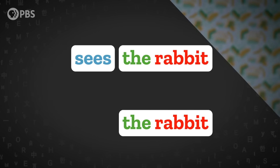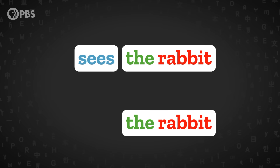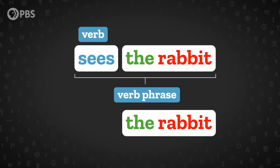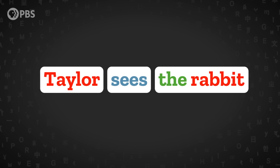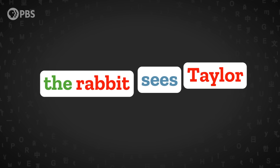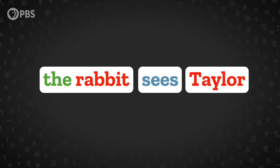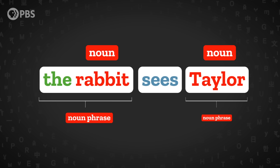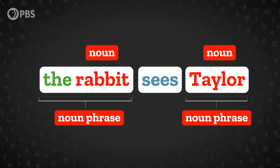In this video, we're going to meet some of the common phrases that are the basis of English grammar. For example, the difference between the phrases 'seize the rabbit' and just 'the rabbit' is that 'seize the rabbit' has a verb in it, so we can call it a verb phrase. Using the substitution test we talked about in the previous video, we can swap the positions of 'Taylor' and 'the rabbit' in this sentence, so they should both be the same kind of phrase.